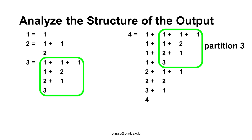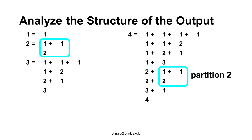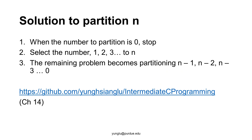Next, let's inspect everything after the first number. When the first number is 1, 3 is left and we need to partition 3. When the first number is 2, 2 is left and we need to partition 2. Thus, the method we are going to use is these steps. Suppose we want to partition number n. Step 1: if the number to partition is 0, stop. Step 2: select a number from 1, 2, 3, all the way to the number we want to partition. Step 3: partition the remaining number, n-1, n-2, down to 0.